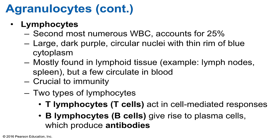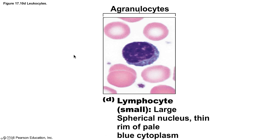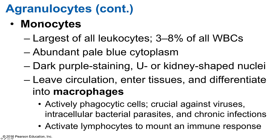Natural killer cells account for about 5–10% of lymphocytes. They attack a wide variety of infectious microbes and any body cell that displays abnormal or unusual plasma membrane proteins. Natural killer cells bind to their target cell and release granules containing toxic substances that destroy the cell. Under the microscope, a small lymphocyte is surrounded by red blood cells; notice the large nucleus with a slight indentation and the thin blue rim of remaining cytoplasm.